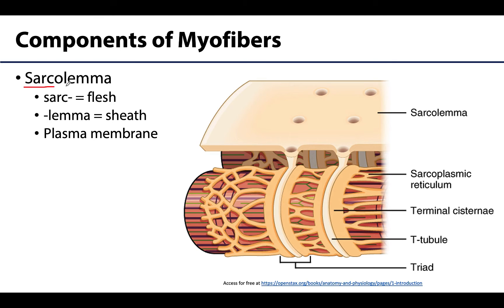The second part of this name, 'lemma,' means sheath, with the sarcolemma basically forming a sheath around the muscle cell — going around the entirety of the muscle cell. In essence, the sarcolemma is the plasma membrane of the muscle cell.